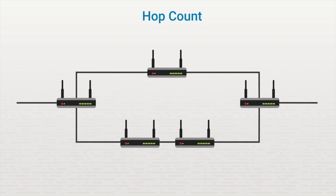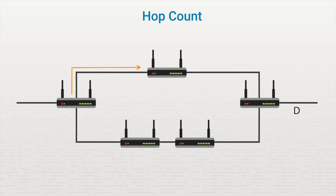One metric used by a routing protocol is called the hop count. The hop count identifies the number of routers that are used to reach a destination network. Say this router has a message that needs to be sent to the D network in this direction. The hop count to the destination would be 1, 2 — the packet goes through two routers to reach the destination. If the packet traveled the other direction, the hop count would be 1, 2, 3. In this example, this router has two routes to the destination network. If using the hop count as its metric, it will use the path with the lower hop count, which is the one with two hops.